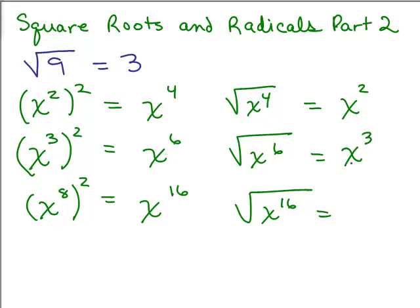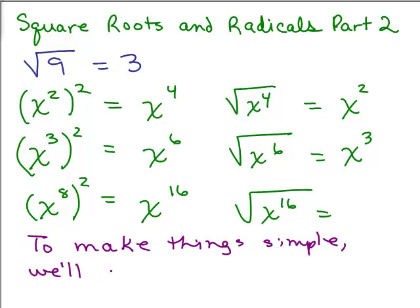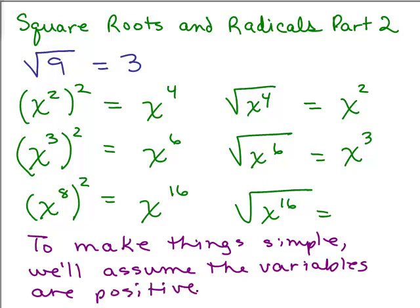But there's a problem: if x was a negative number, note that you just took the square root of something, and this x cubed would also be a negative number. So in reality, it's the absolute value of x cubed — that's a way of making it positive. But to make things simple, we're just going to assume the variables are positive numbers, since we're just learning about it.